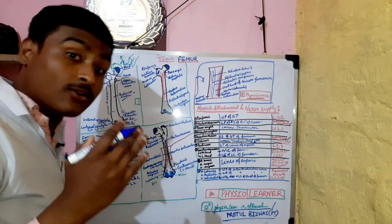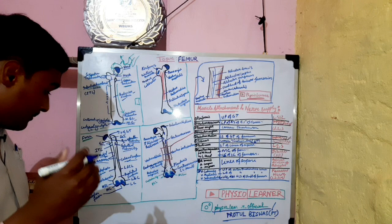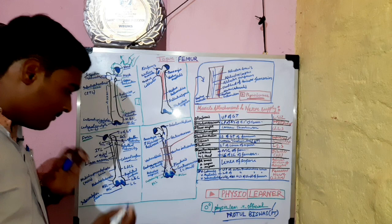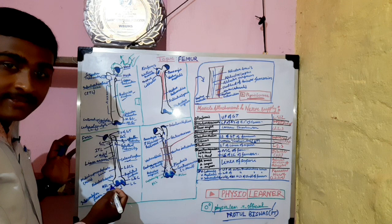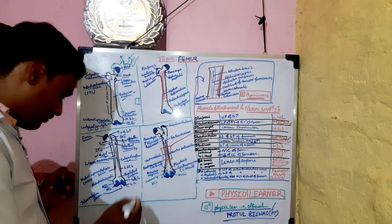You can see the medial supracondylar ridge, just above the medial epicondyle, and the lateral supracondylar ridge. We can see the popliteal surface. In this prominent part, you can see the lateral epicondyle, and on the medial side the medial epicondyle. You can also see the medial condyle, lateral condyle, and identify the intercondylar surface and intercondylar fossa.